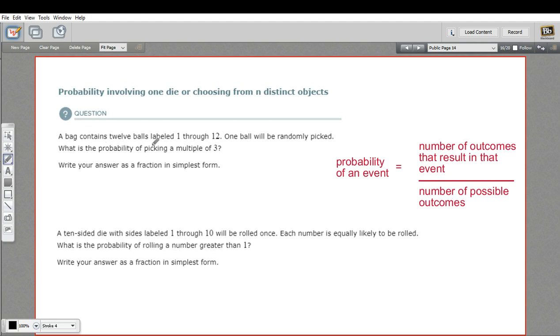This one says a bag contains 12 balls labeled 1 through 12, and one ball will be randomly picked. What's the probability of picking a multiple of 3? I'm just going to draw a quick picture.